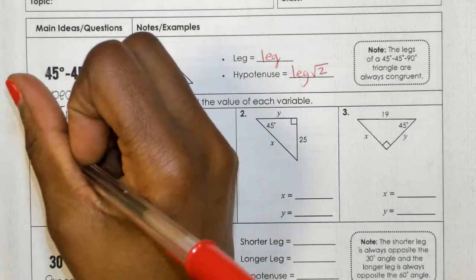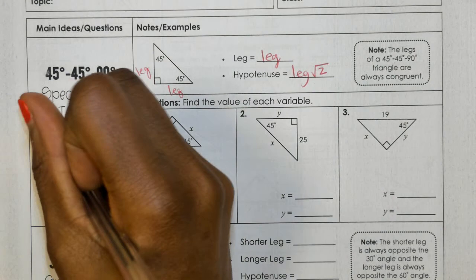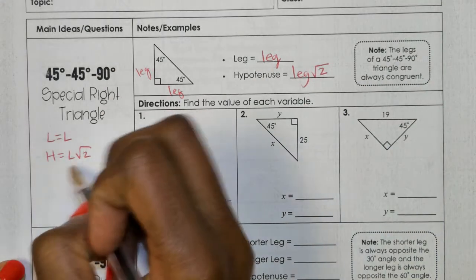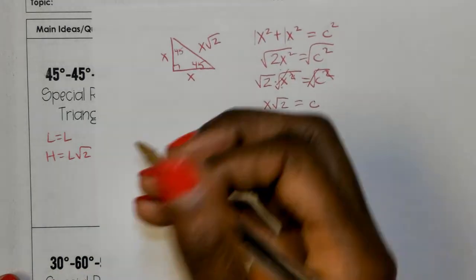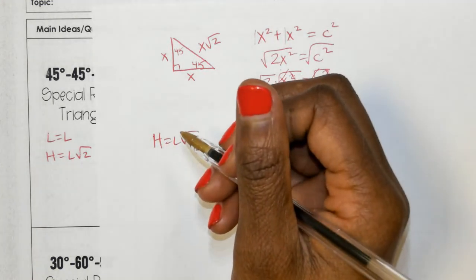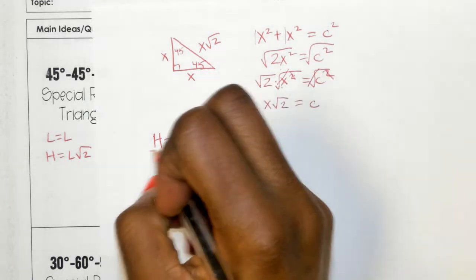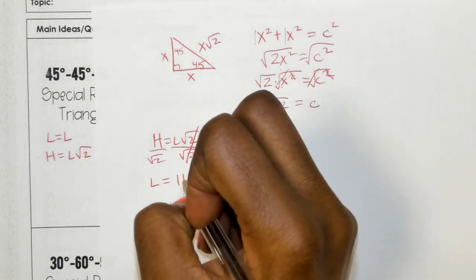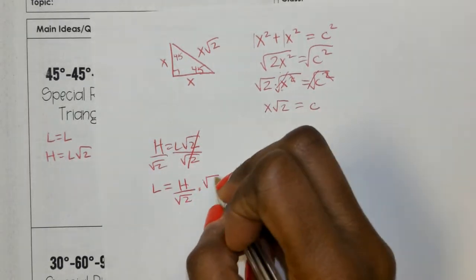We can derive some formulas from that. We know leg equals leg — if you're given one leg, the other leg is the same. The hypotenuse equals the leg times the square root of 2. If we solve this equation for L: H equals L times radical 2. To get L by itself, we divide both sides by radical 2, giving us L equals H over radical 2.